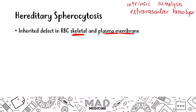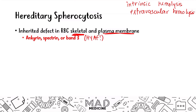Remember, these two are opposite — whatever happens intrinsically, it happens extravascularly. This defect in the red blood cell skeleton and plasma membrane is going to be caused by defective proteins, mainly ankyrin, spectrin, and band 3. These are the main three proteins associated with hereditary spherocytosis. This is also very high yield — just memorize it and you'll be good.